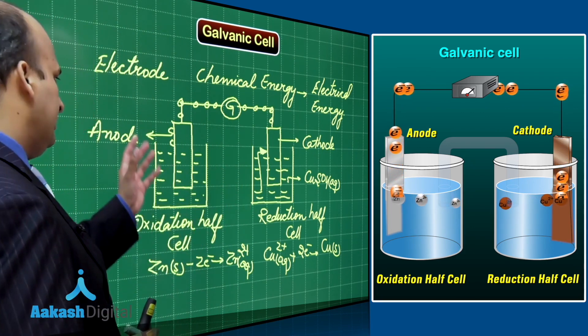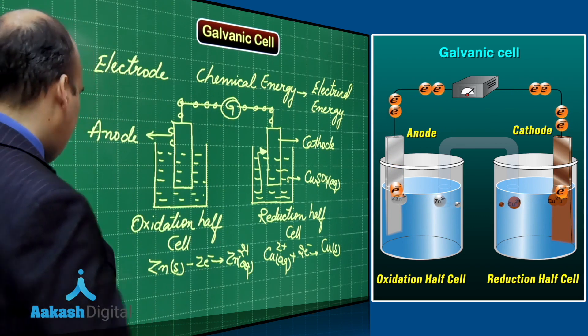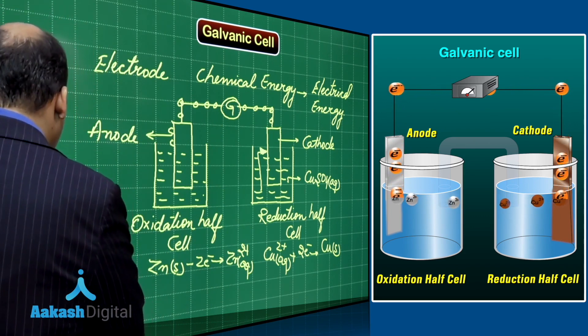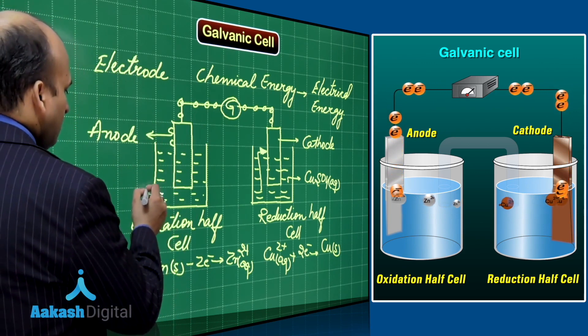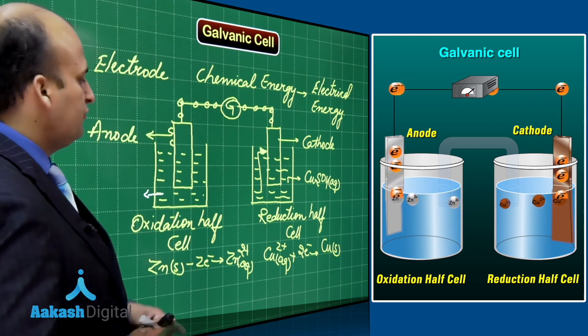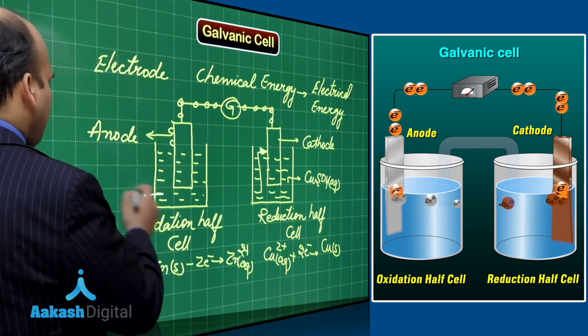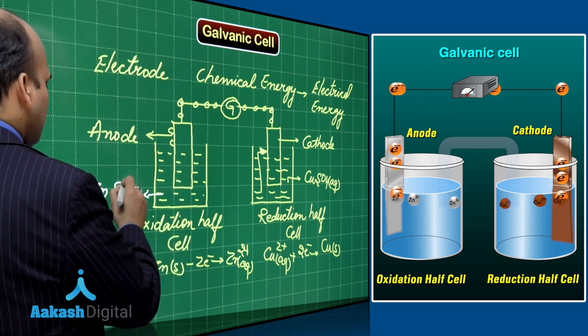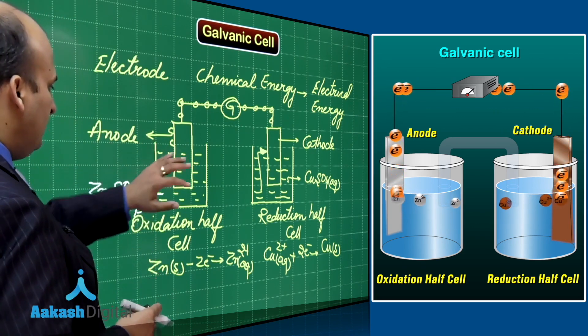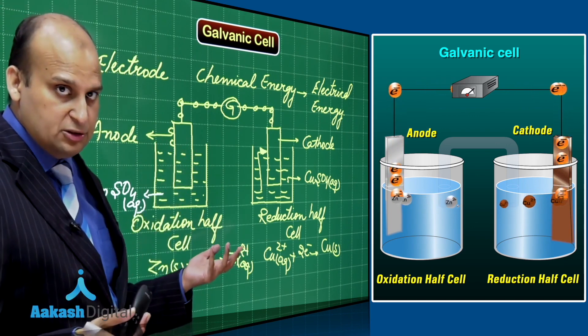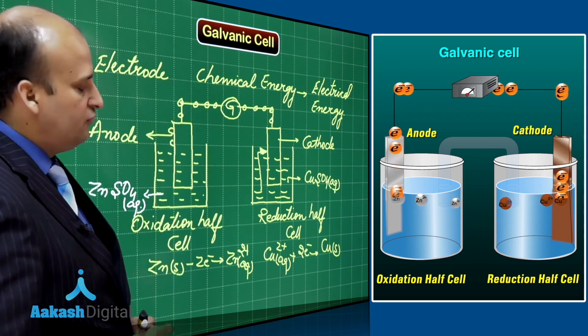Now, what we observe that electrons have started moving from anode to cathode. So, in a way we say, yes, our job is done, but it is not done. Why it is not done? The reason is that the moment electrons come to this solution, this solution is generally we take the salt of the same element whose rod is being used over here, like zinc is used over here. So, I will be taking zinc sulfate. Now, when Zn²⁺ ion keeps on coming into the solution, the solution will become positively charged. If the solution is positive, do you think it will allow the flow of electrons? No, it will not allow the flow of electrons.